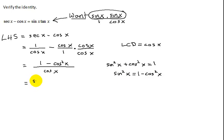So now my numerator instead of being 1 minus cosine squared x, I can write it as sine squared x over cosine x. And some students think they're done at this point because they have what they want. But remember for a trig identity you have to prove the left hand side equals the right hand side.